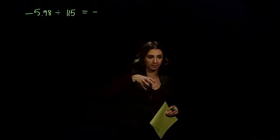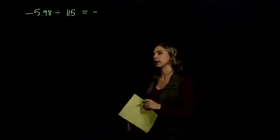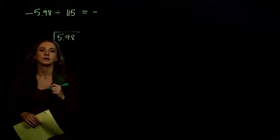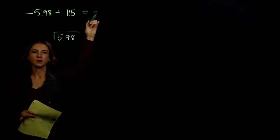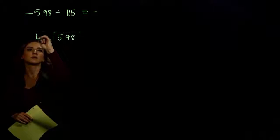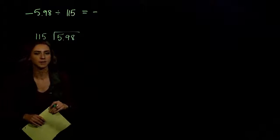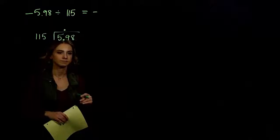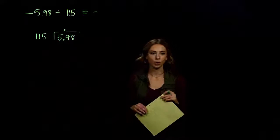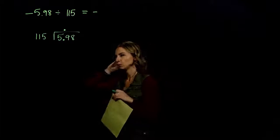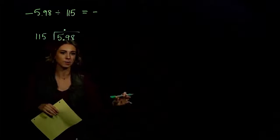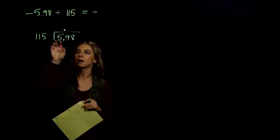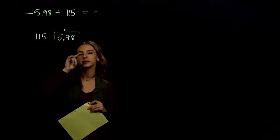Let's make note that our answer is going to be negative, so we don't have to deal with a negative sign in our long division. Now let's take 5.98 — it goes on the inside. We hack off the negative because we already know our answer is going to be negative. On the outside, we're dividing by 115. Very first step: where is our decimal point? It needs to be in the same place in my answer. 115 is large, so we'll probably have to write off a couple multiples to see how close we can get. 115 doesn't fit into 5 or 59, so we're looking at 598 first.